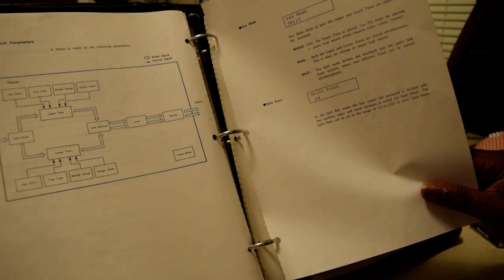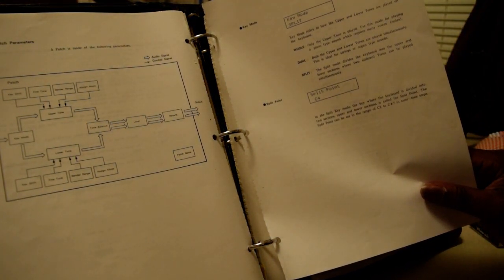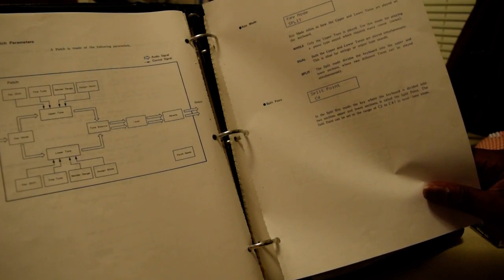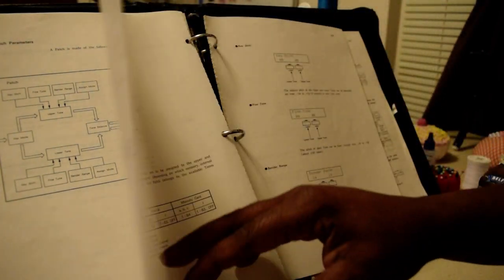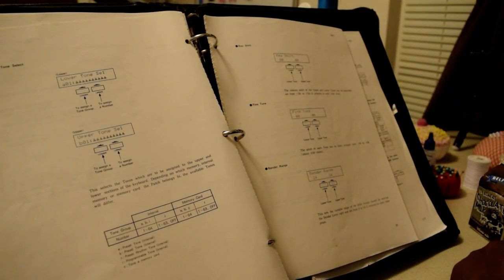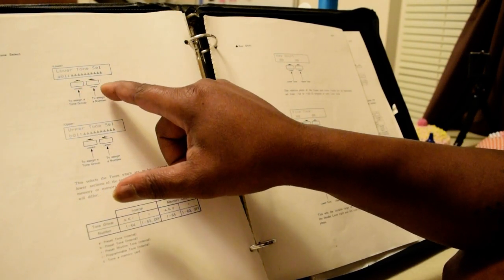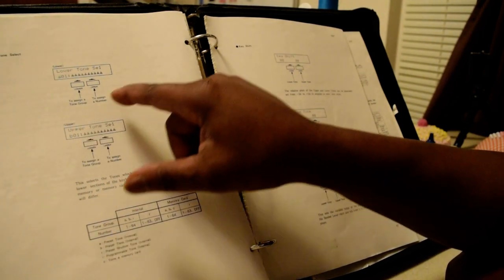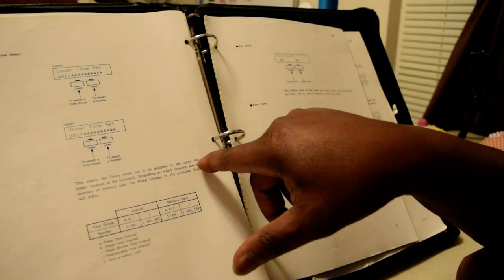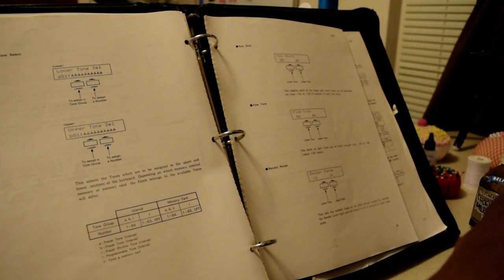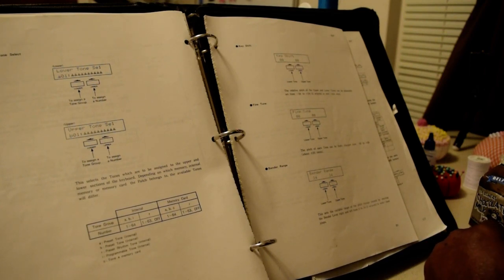Sometimes I will put it in split so I can play two different sounds. The split point is C4. In the split key mode, where the keyboard is divided into two sections, upper and lower sections, is called the split point. The split point can be set in the range of C2 through C7 in semitone steps. They have that memory card on that Roland D20. It's a floppy. Mine's, last time I checked, didn't work.